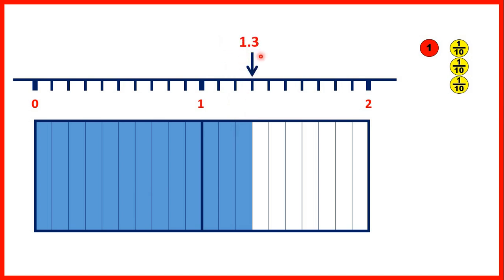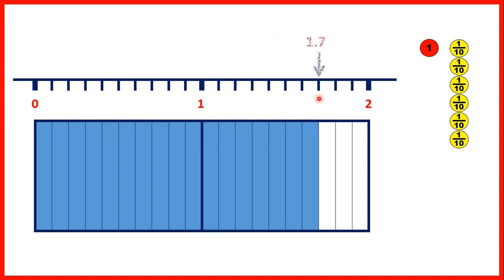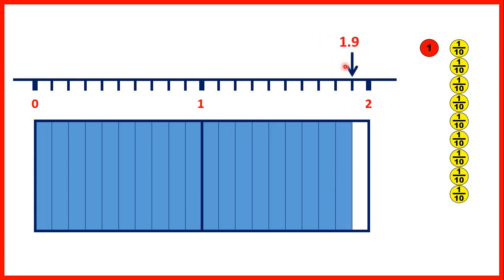1.3 means we have 1 whole and 3 tenths. I'll speed this up: 1.4 is 1 and 4 tenths, 1.5 is 1 and 5 tenths, 1.6, 1.7, 1.8, and now we have 1.9, because we have one whole rectangle coloured in and 9 tenths of another one. So 1 whole and 9 tenths is represented in decimal form as 1.9.